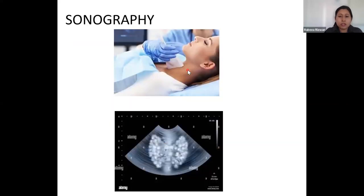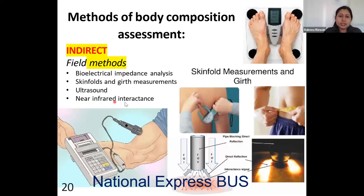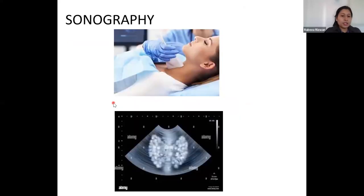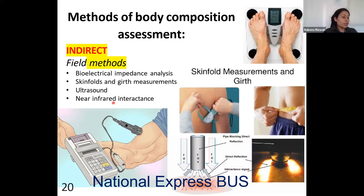Ultrasounds such as those used for the thyroid are also used in pregnant women to evaluate the baby. This means various body parts and regions can be evaluated. Near-infrared interactance uses infrared radiations that penetrate inside the body and are used to evaluate body composition. According to the absorption and refraction of these infrared rays, a picture is generated on the computer. If you have any questions, you can email me.